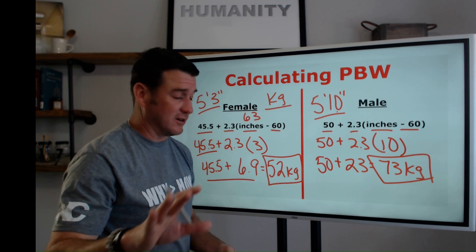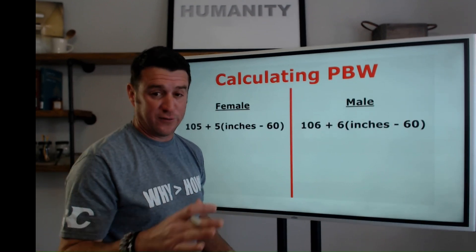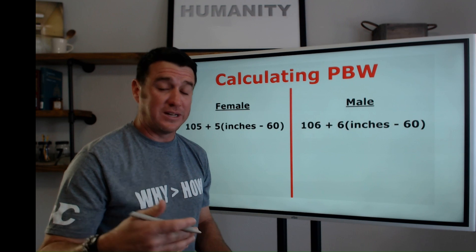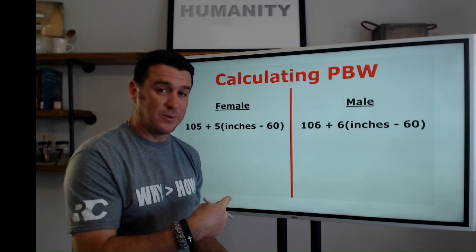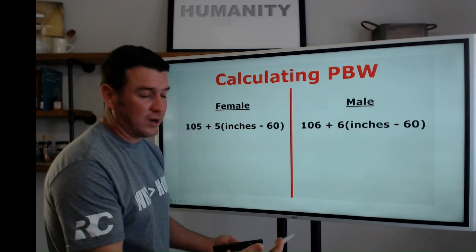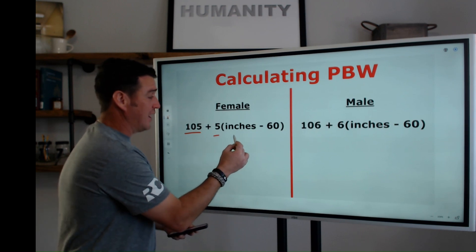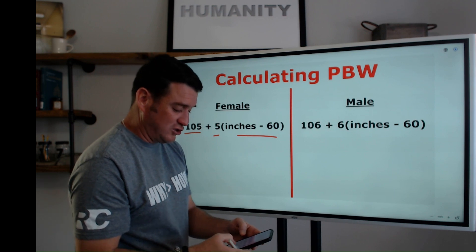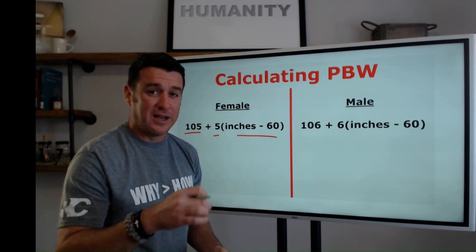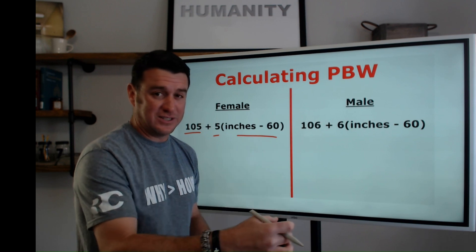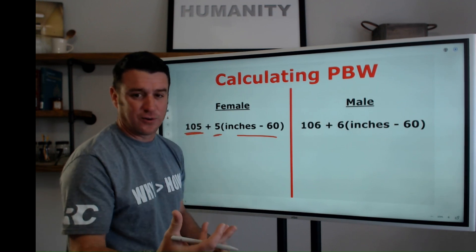Now, in all fairness, there is another formula out there that many schools teach. And I'm not saying it's wrong. It's just a different formula. And it gives you the predicted body weight in pounds. So that's the difference. The one we just talked about gives you kilograms. This one gives you pounds. And if you recognize, it's the same story. Because for females, we're going to start at 105 pounds. And then we're going to add 5 pounds for every inch over 60. Here's what's cool about this: 2.3 times 2.2 equals 5. So we've turned all these numbers into pounds instead of kilograms. That's all that's happened here.